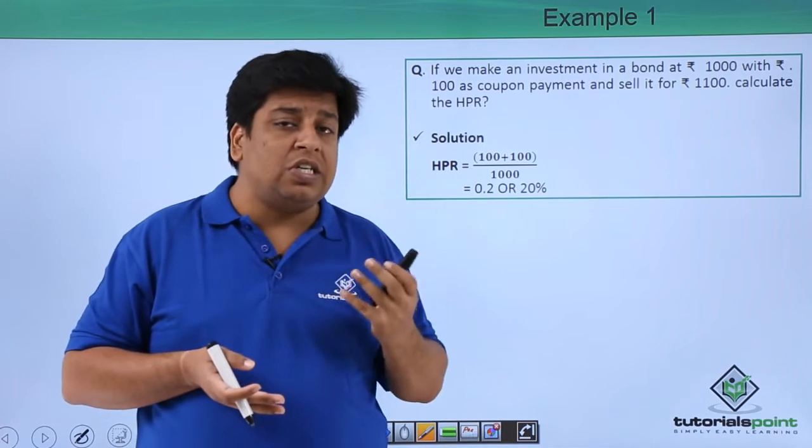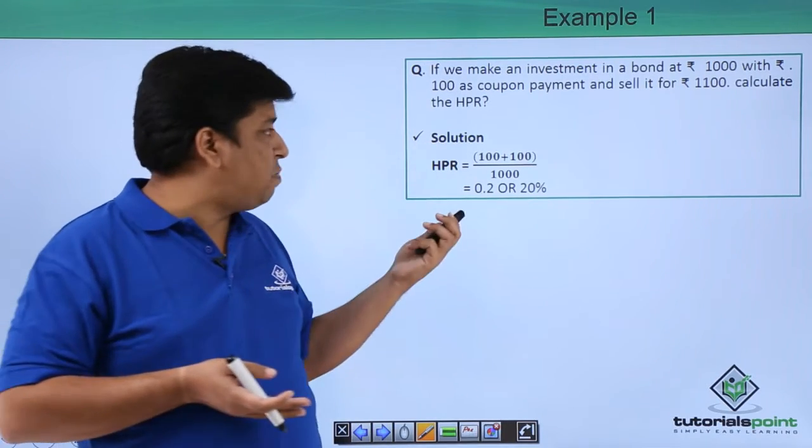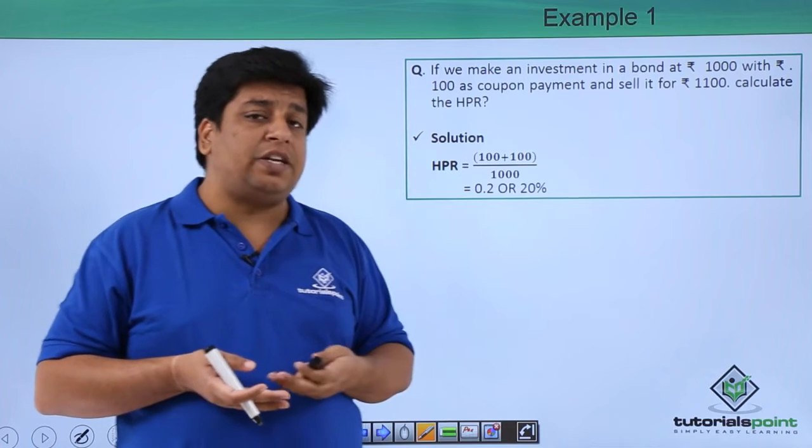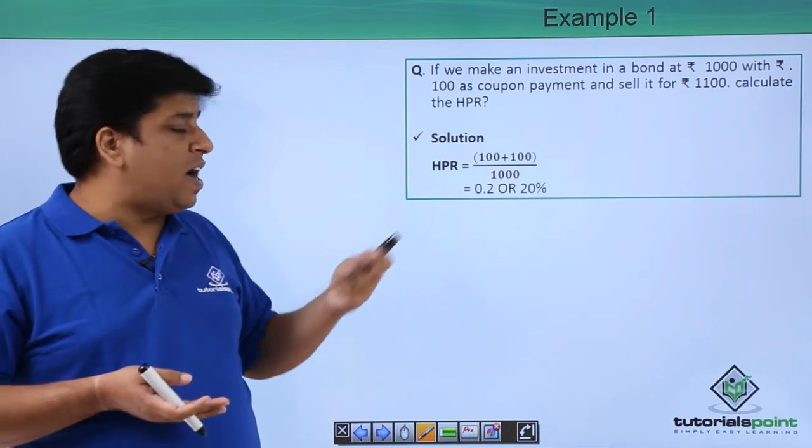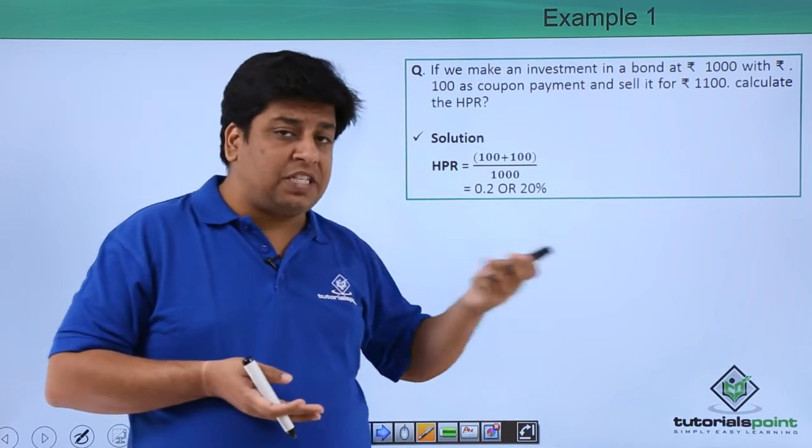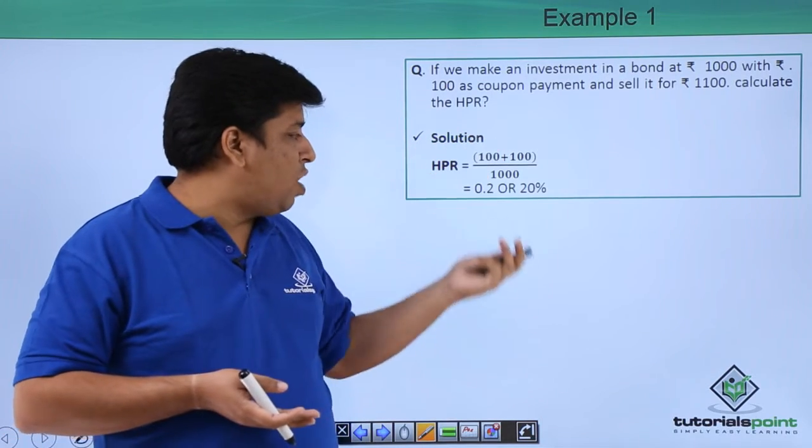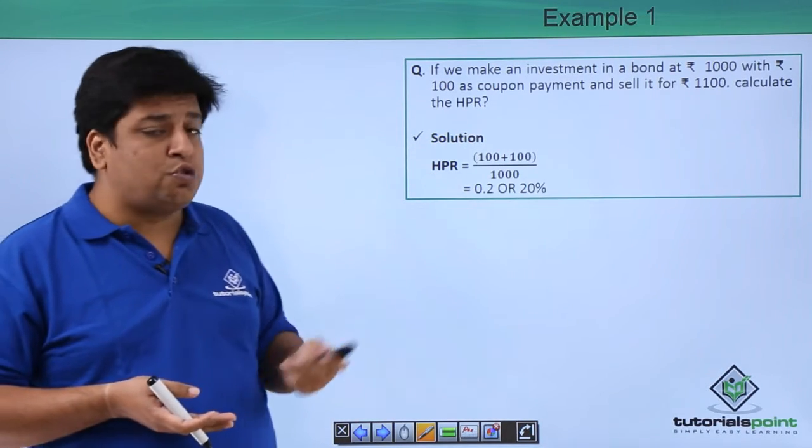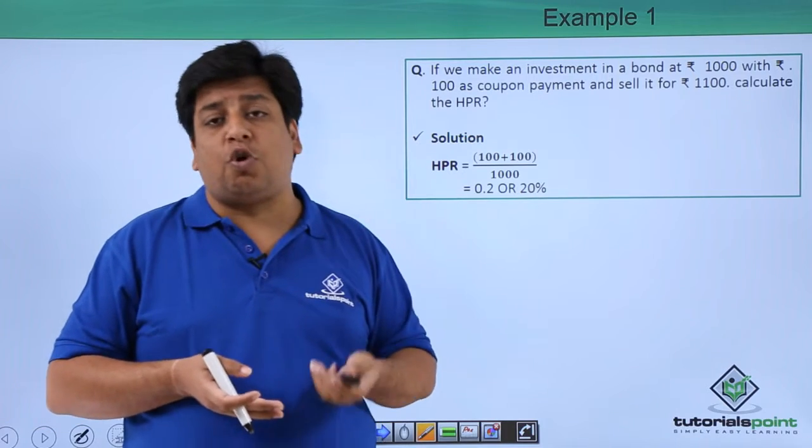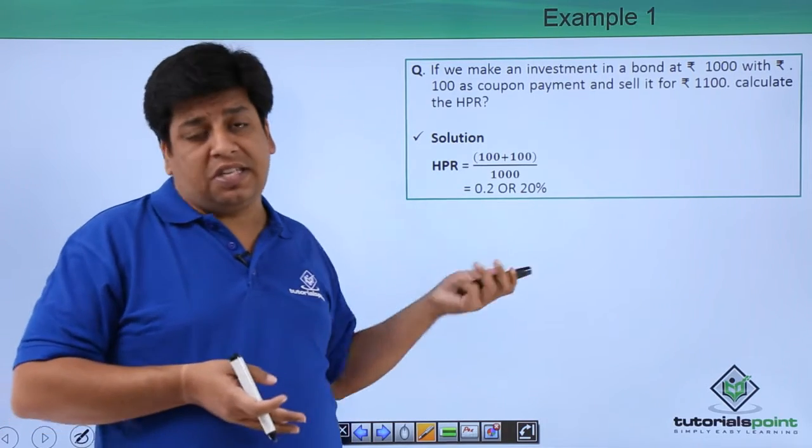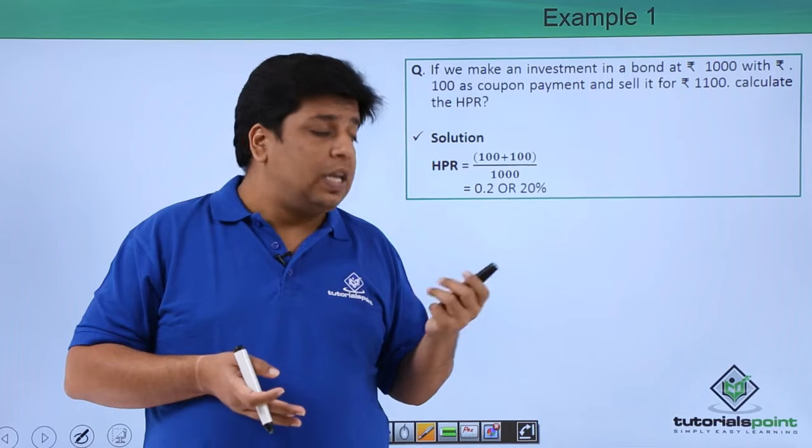We divide it by ₹1000, that's the price we incurred to buy this bond. So ₹200 divided by ₹1000 is 0.2 or 20%. So your holding period return in this case is 20%. Now let's take another example. Here you have invested ₹1000, just like in the continuing example.